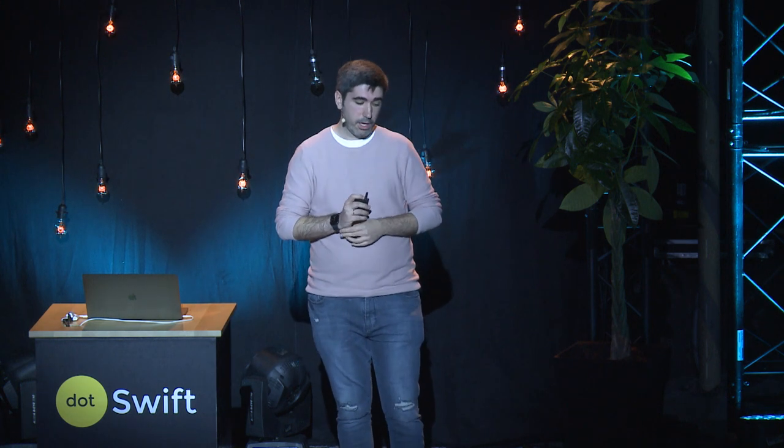Combine provides sequential composition of effects using the flatMap operation. That is also supported in Bow, but we provide an additional imperative style syntax that has the exact same functional properties that we have seen before.